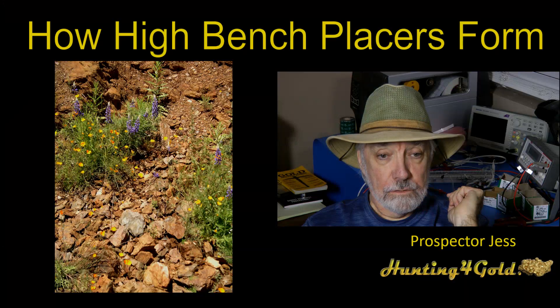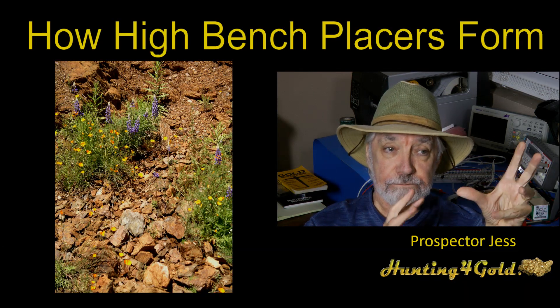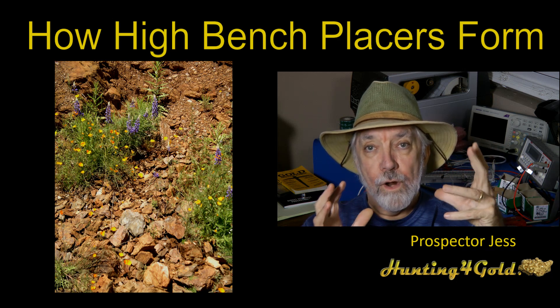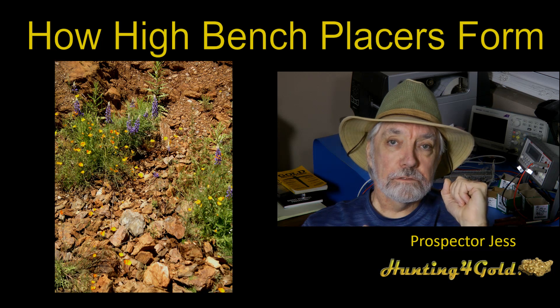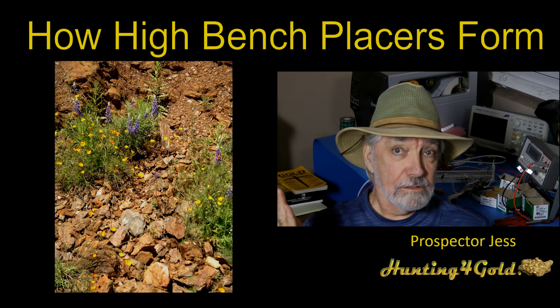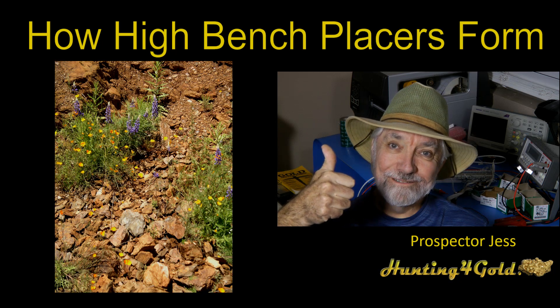If you start seeing colors — little dots of gold in your pan — then you've discovered a potential high bench placer deposit, and you'll need to figure out another way to work it: bring water up with a hose, take material down with a bucket and pulley, or whatever it takes. So that's high bench placers for tonight. It's important to recognize the differences in the types of material you're looking at — the rocks, and in this case the plants — and make that differentiation so you can find gold quicker. This is Prospector Jess. Good prospecting, over and out, see you next time.